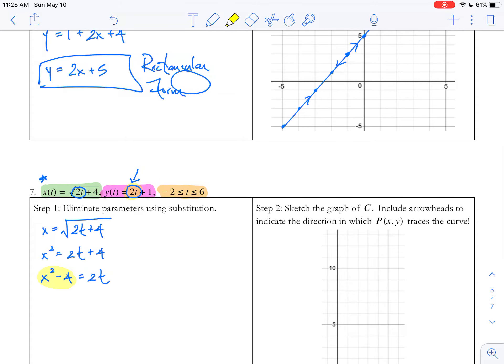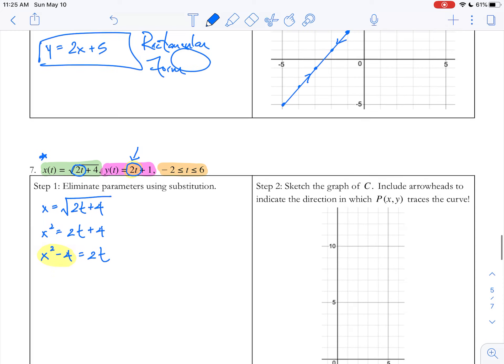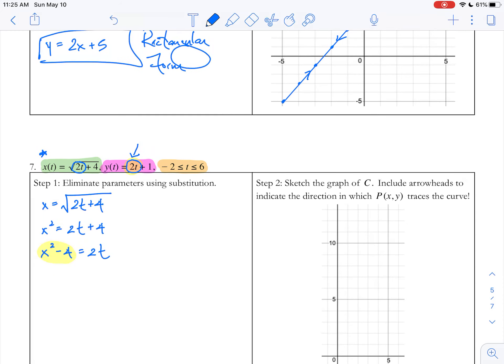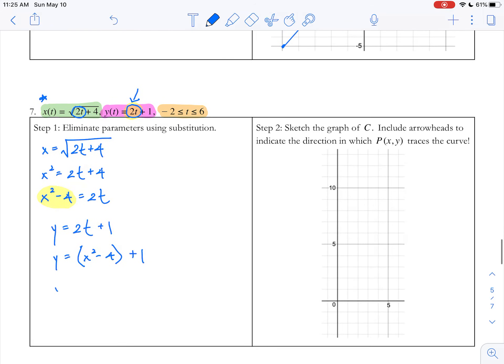So x² - 4 = 2t. Now I can take this x² - 4 and plug that in for 2t. Instead of y = 2t+1, I can say y = x² - 4 + 1, which simplifies to y = x² - 3.